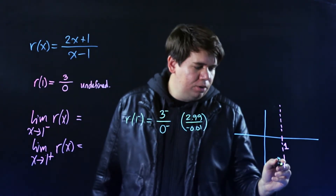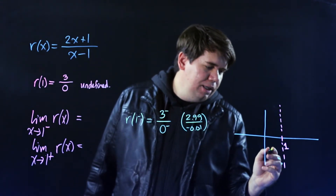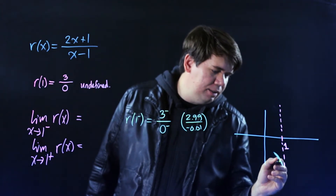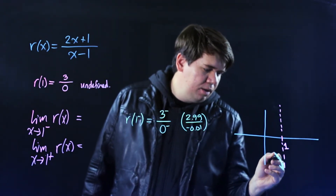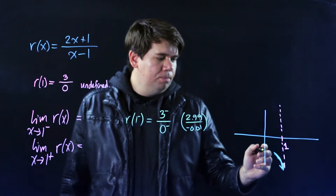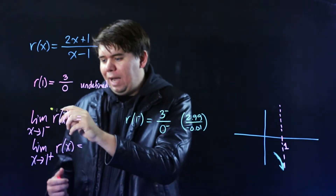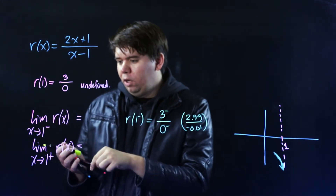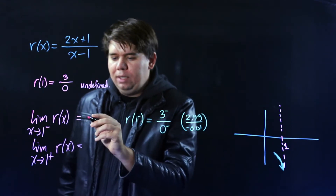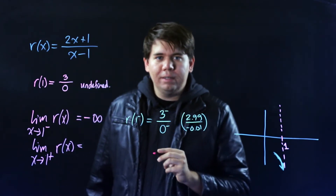As we get closer and closer to 1, we get bigger and bigger negative numbers. So the limit as x approaches 1 from the left is negative infinity.